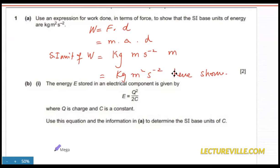Now the energy stored in an electrical component is given by this: Q is charge and C is a constant. Use the equation to determine the SI base unit of C, and we have to find out the unit of C.